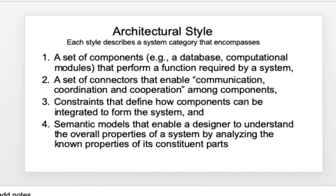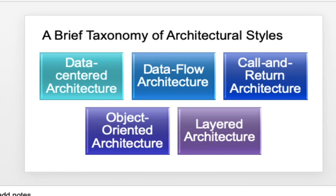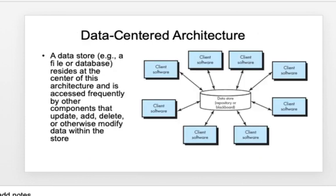Architectural style involves a set of components, a set of connectors, and some constraints, all guided by semantic models that help the designer understand the overall properties of the system. There are five types: data-centered, data flow, call and return, object-oriented, and layered. In a data-centered architecture, a data store — a file or database — resides in the middle, with client software surrounding it that frequently accesses the data store and performs operations like add, modify, and delete.